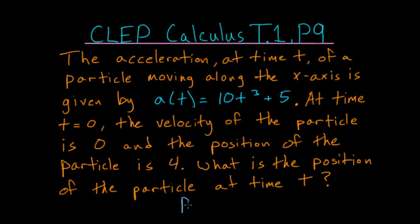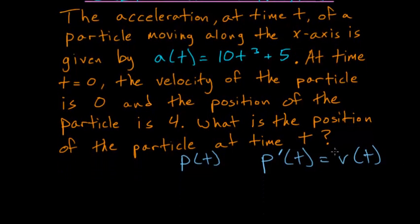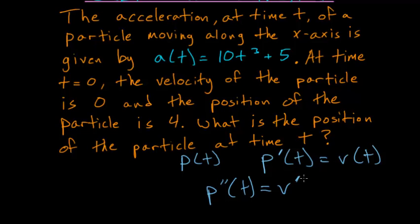Let's call that p(t), and we're given the function for acceleration. Let's first think about this in reverse. The rate of change of the position of the particle is the velocity, so p′(t) is equal to the velocity function. And the rate of change of the velocity is the acceleration function. So in other words, p″(t), or the second derivative of p, is equal to the derivative of the velocity, which is just equal to the acceleration.